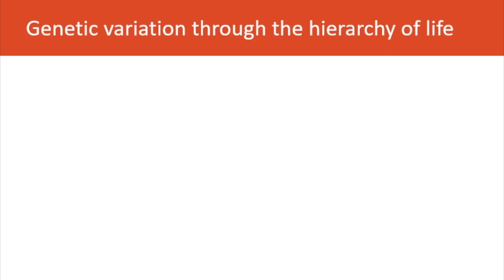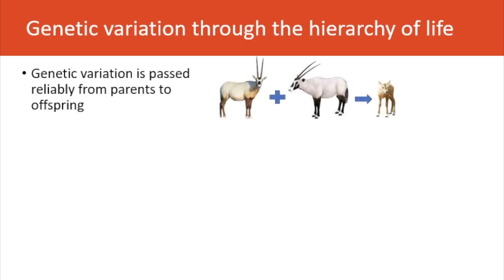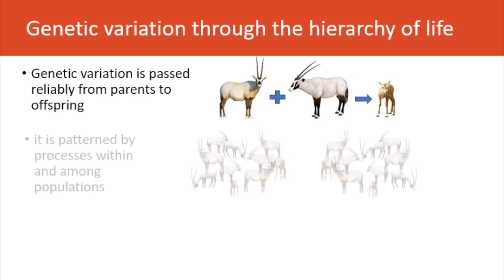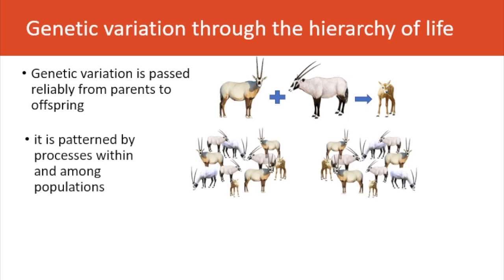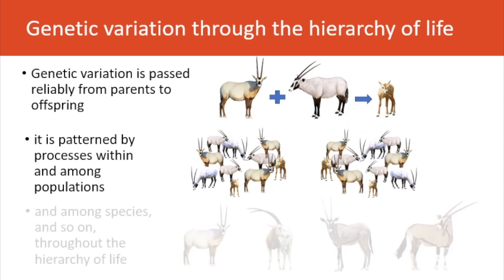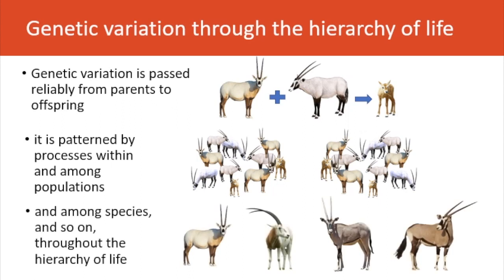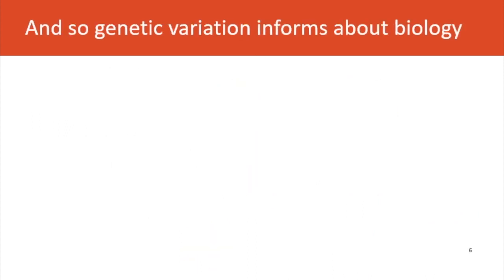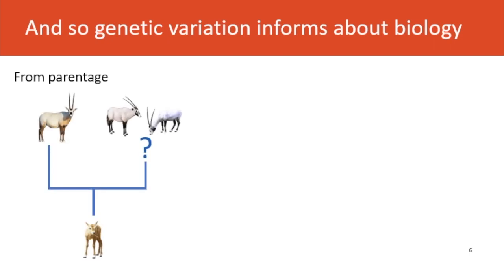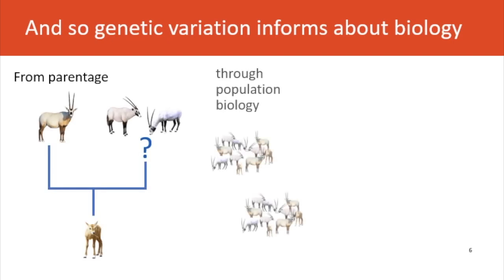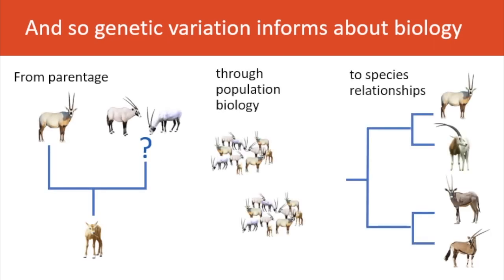Genetic variation is organised through the hierarchy of life. It's passed reliably from parents to offspring, and can be patterned by processes within and among populations, and also among species throughout the hierarchy of life. Genetic variation informs us about biology from parentage through population biology and onto species relationships and beyond.